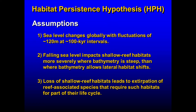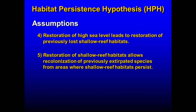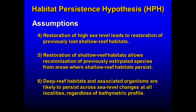The third assumption is that loss of shallow reef habitats leads to extirpation or loss of reef-associated species that require those shallow reef habitats for some part of their life cycle. The fourth is that restoration of high sea level leads to restoration of previously lost shallow reef habitats, allowing recolonization from areas where shallow habitats persisted through sea level fluctuations. The fifth assumption is that deep reef habitats and associated organisms are likely to persist across sea level changes in all localities regardless of the bathymetric profile.